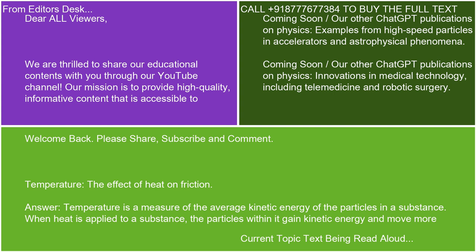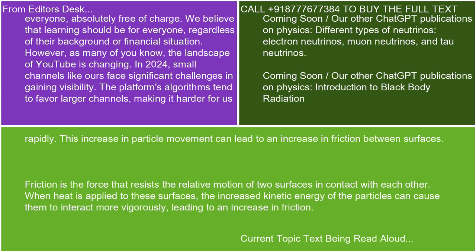Answer. Temperature is a measure of the average kinetic energy of the particles in a substance. When heat is applied to a substance, the particles within it gain kinetic energy and move more rapidly. This increase in particle movement can lead to an increase in friction between surfaces.